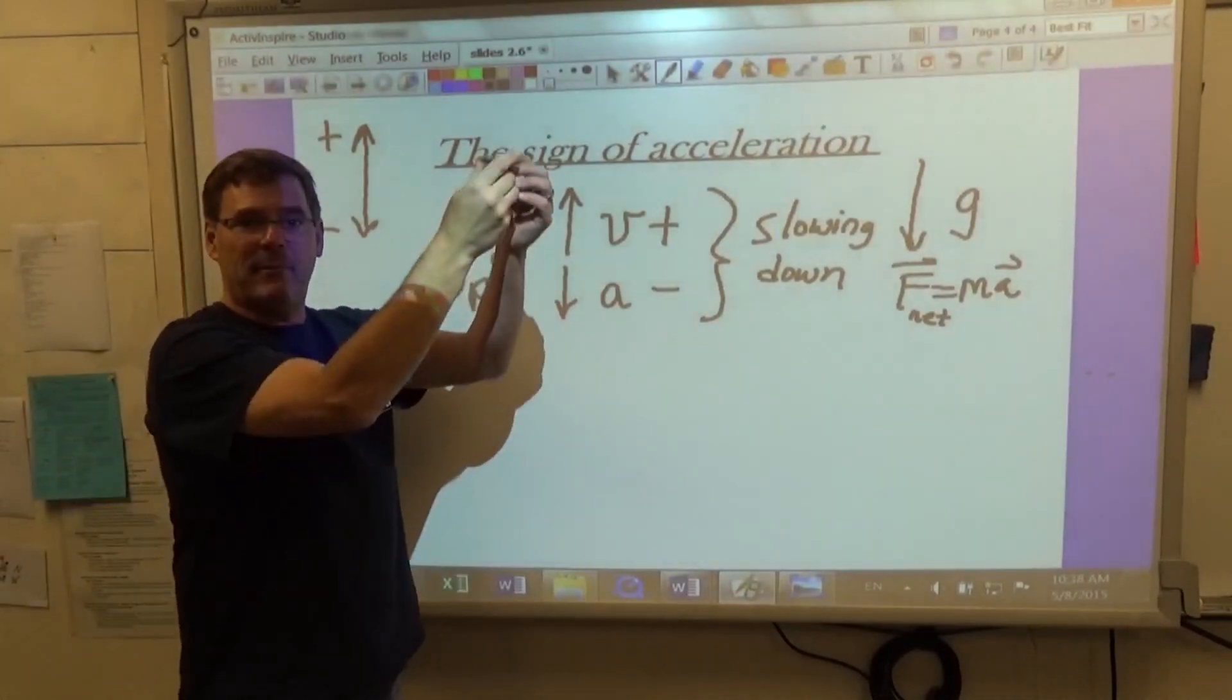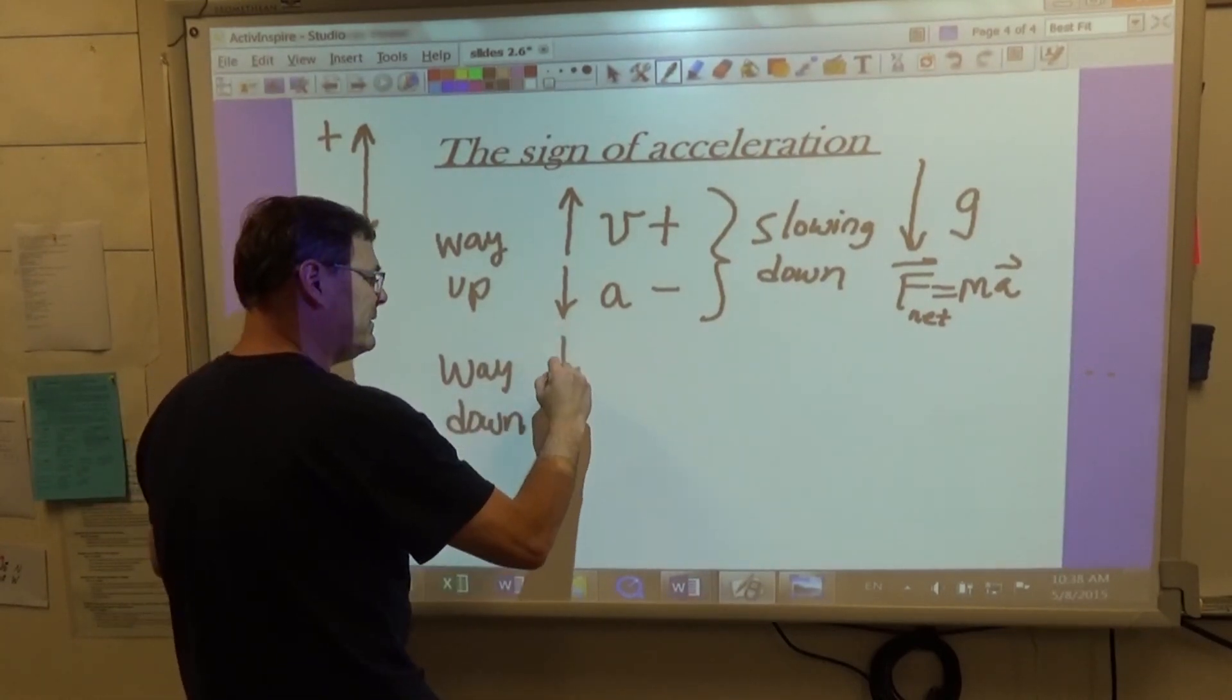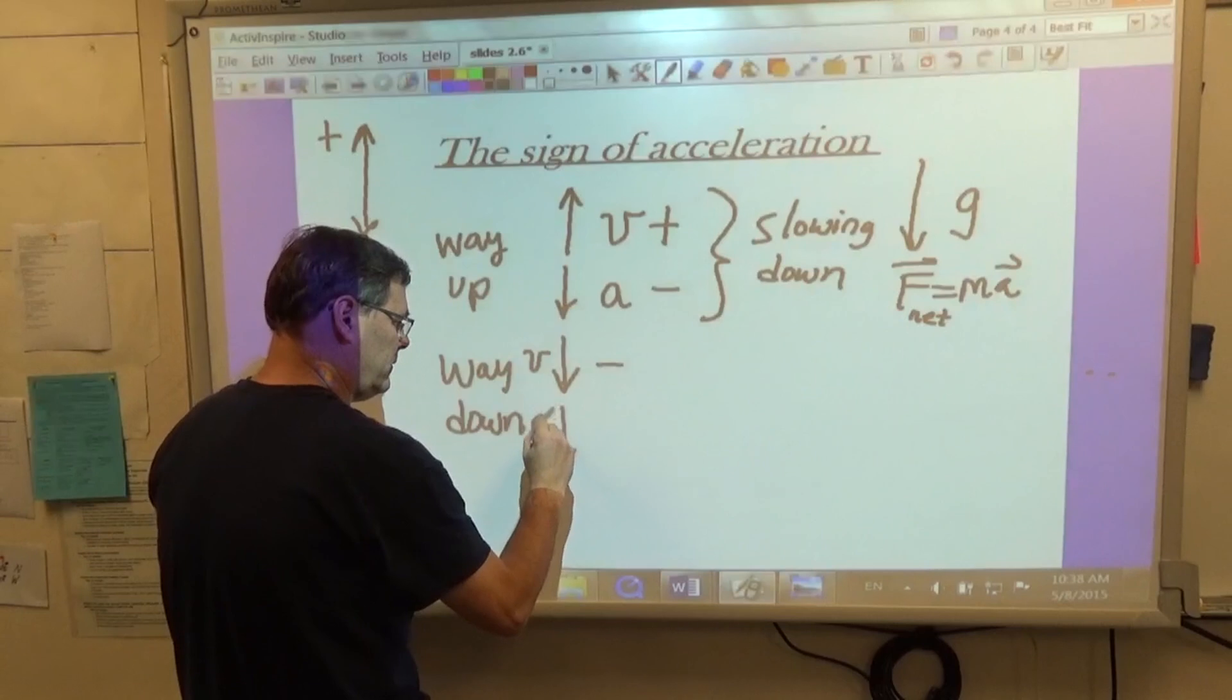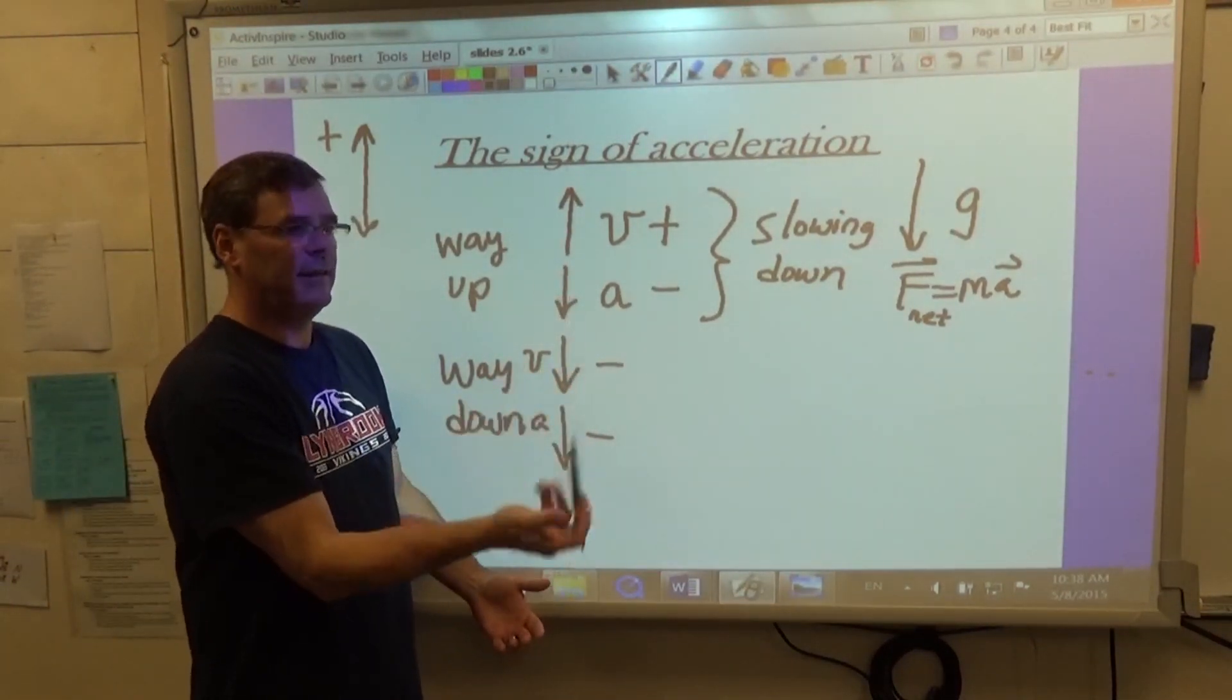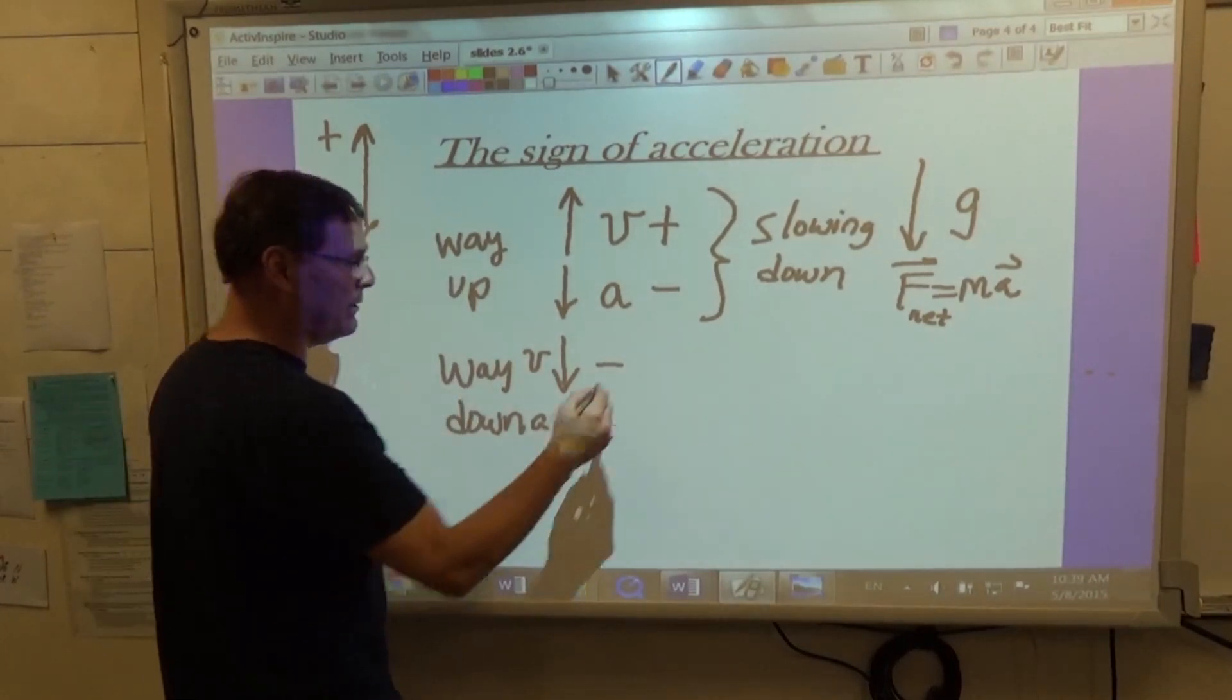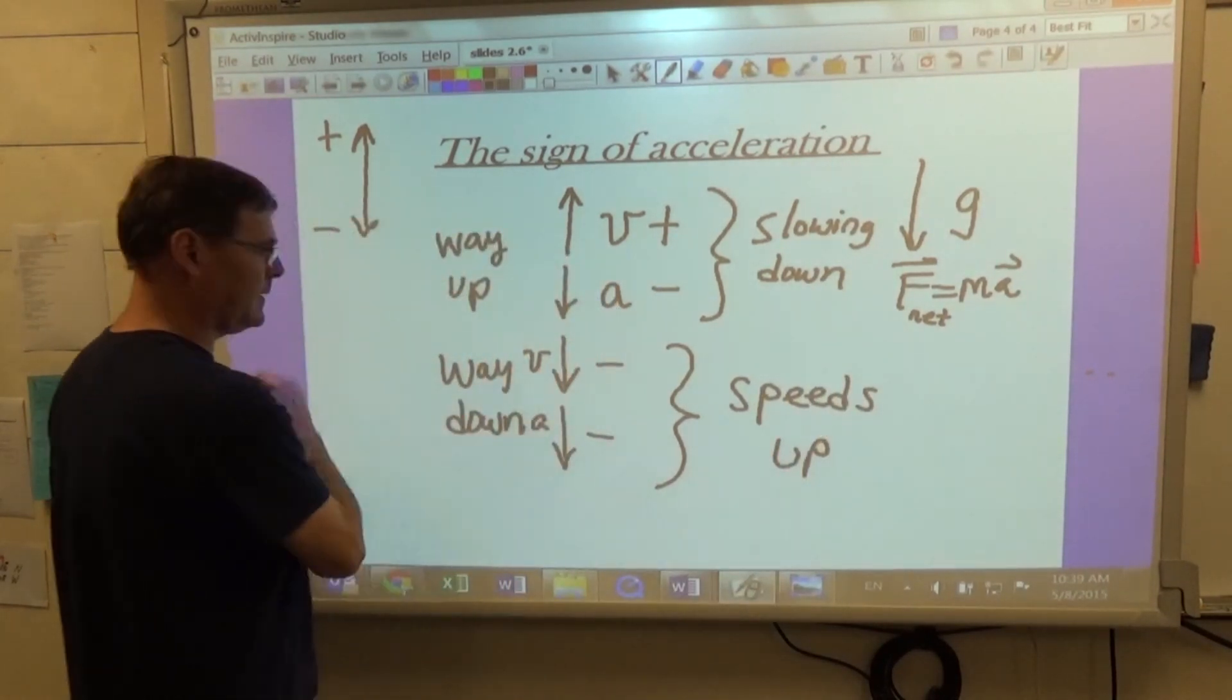It reaches the top, and then it starts to come back down. So now on the way down, the velocity is in the negative direction, and the acceleration is still in the negative direction. The whole time the object is in the air, the acceleration is down the same direction as the force. And as something falls from a higher height, we know it speeds up.